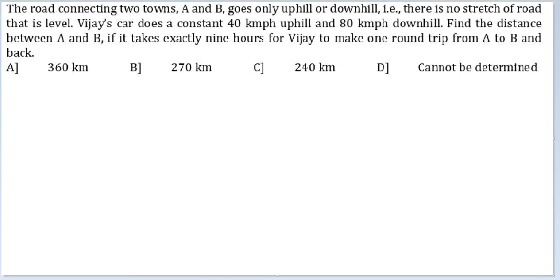Let's look at this question. The road connecting two towns A and B goes only uphill or downhill — there is no stretch of road that is flat. Vijay's car does a constant 48 kmph uphill and 80 kmph downhill. Find the distance between A and B if it takes exactly 9 hours for Vijay to make one round trip from A to B and back.